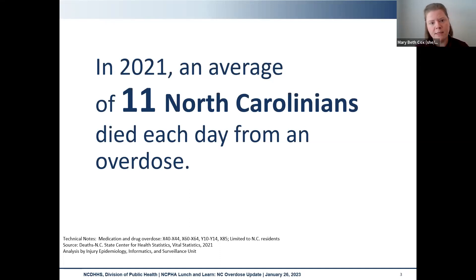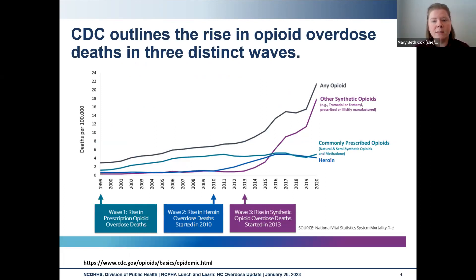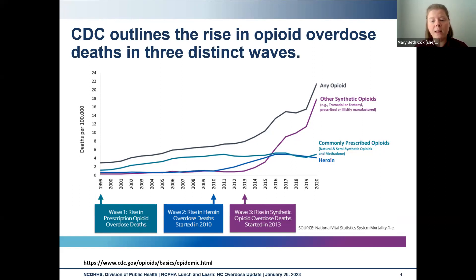How did we get to 11 deaths per day? CDC talks about three different waves of the overdose epidemic, particularly opioid overdose. Starting with wave one: the increase in prescription opioid overdoses, a result of pain being added as a fifth vital sign and over-prescribing of these medications. Then in 2010 nationally, we start to see the rise in overdose deaths involving heroin. And then wave three beginning in 2013, where we see a rise in other synthetic opioid overdoses — the technical term for illicitly manufactured fentanyl-involved overdoses.